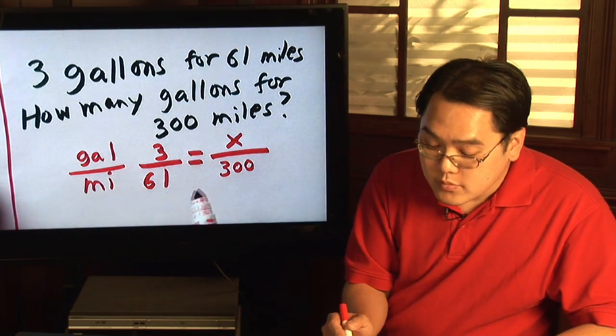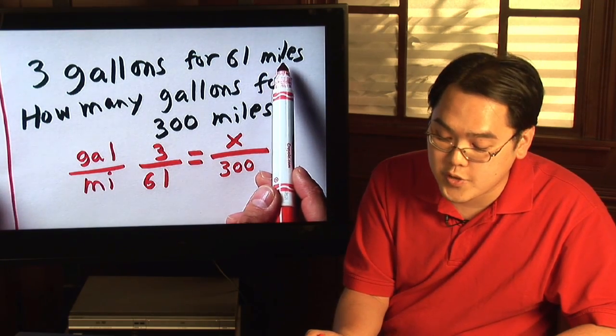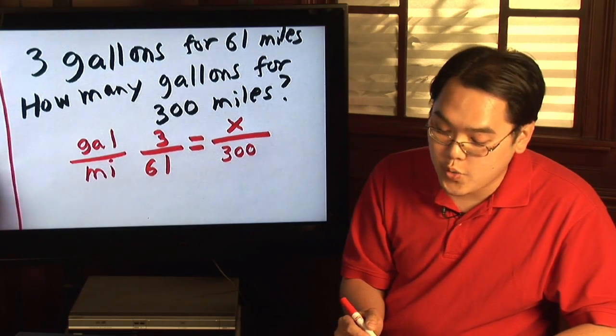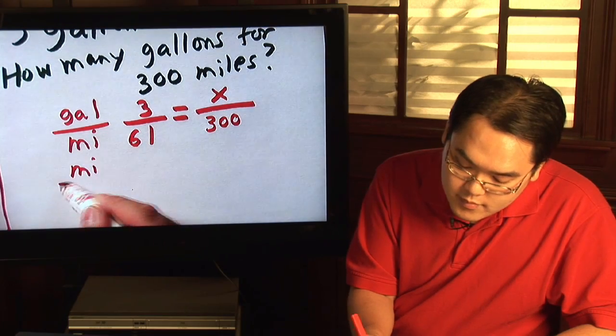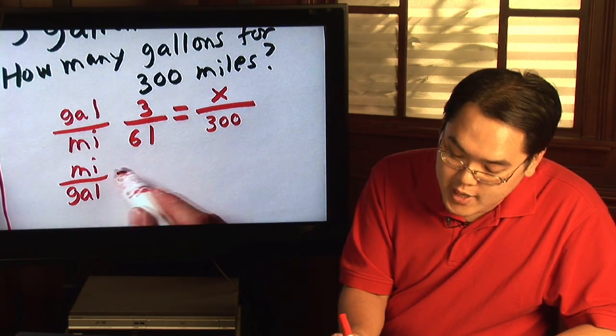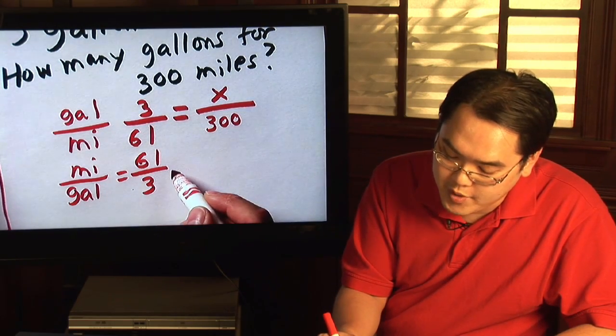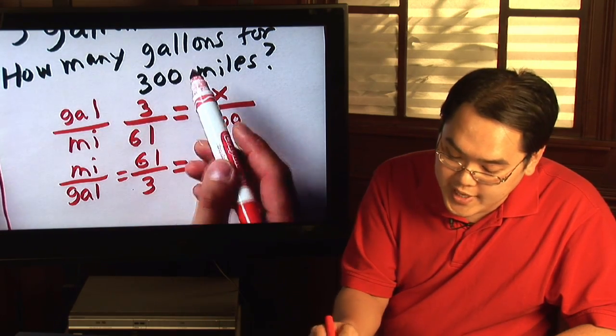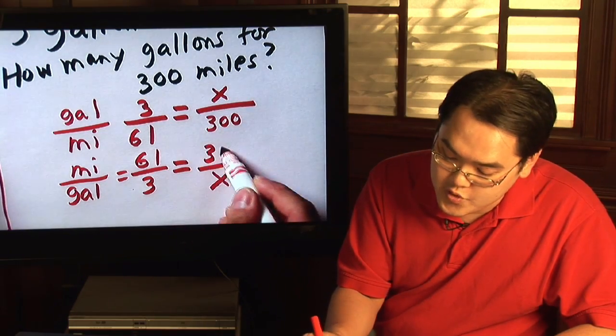Now if you wanted to you could have set miles be the numerator and then gallons in the denominator, so you would have something that goes like this. And you'll have miles which was sixty-one in the first comparison over three in the first comparison for gallons equal to and then this time how many gallons since gallons is in the denominator, you have x and then miles for three hundred.